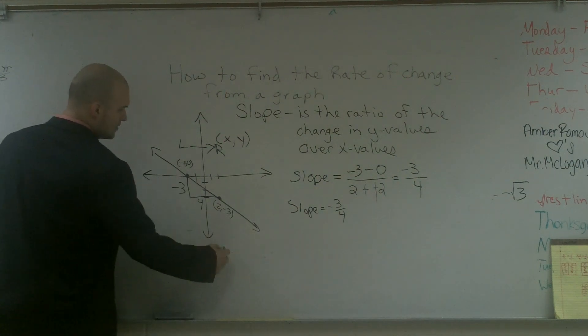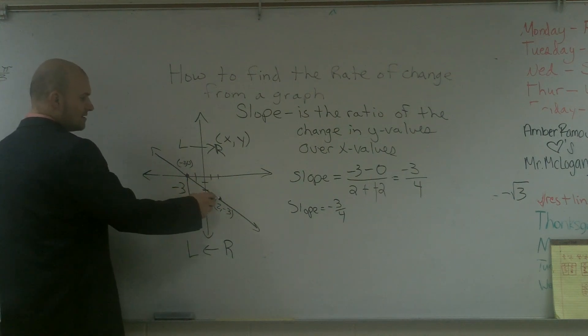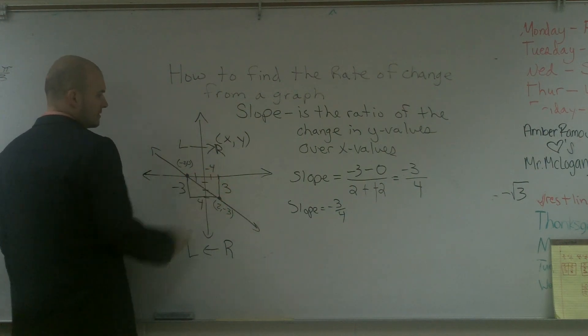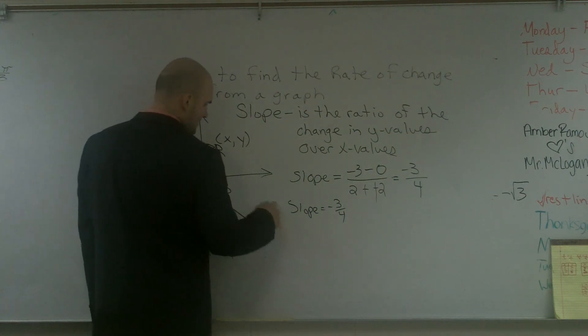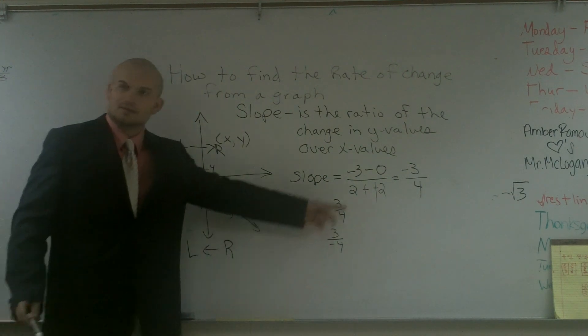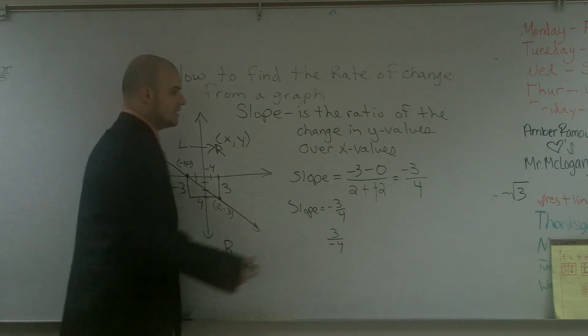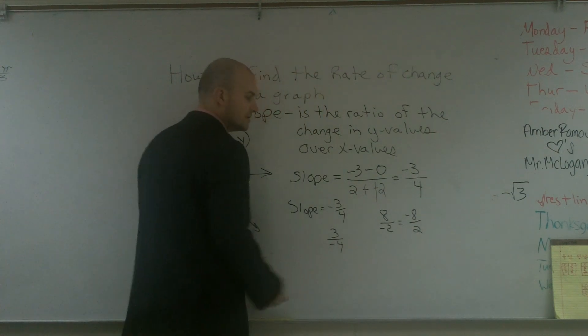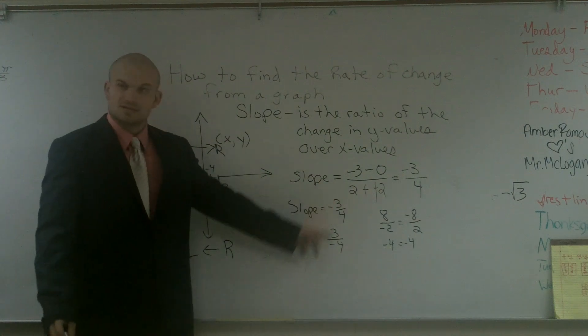You could also go from right to left. If I'm going right to left, that means I'm going up 3 and to the left negative 4. So the change in y was 3. This would be 3 over negative 4. And these are equivalent. Why are they equivalent? Well, 8 divided by negative 2 is equal to negative 8 divided by 2, because that's negative 4 equals negative 4. So that's why these two slopes are equivalent.